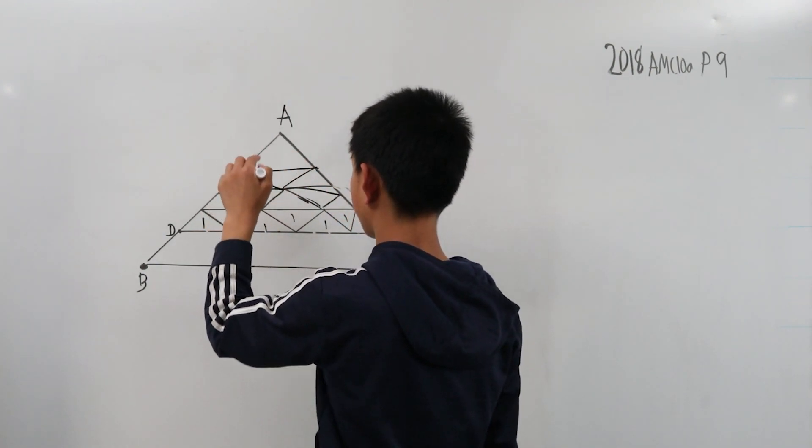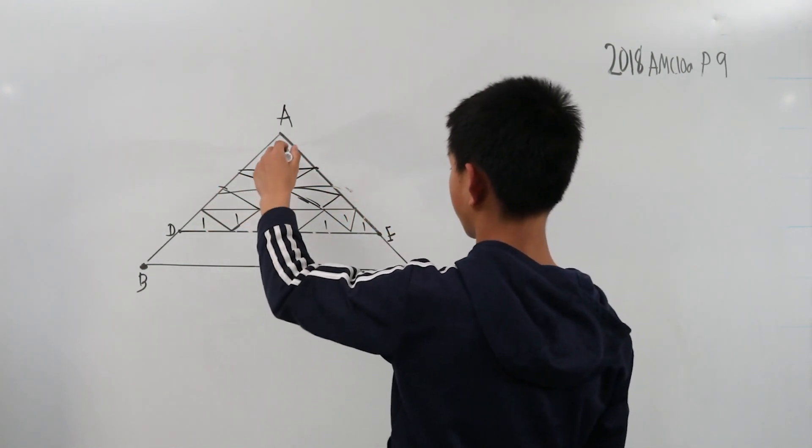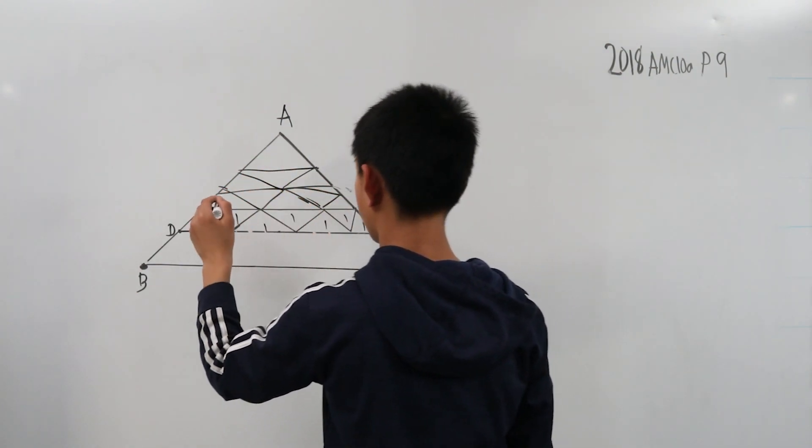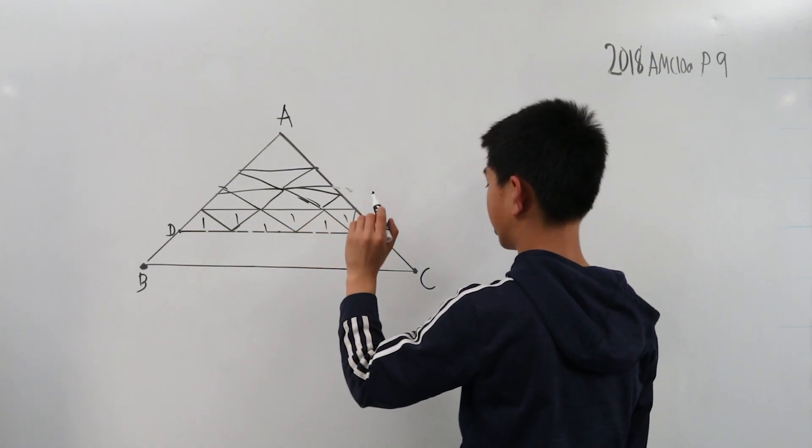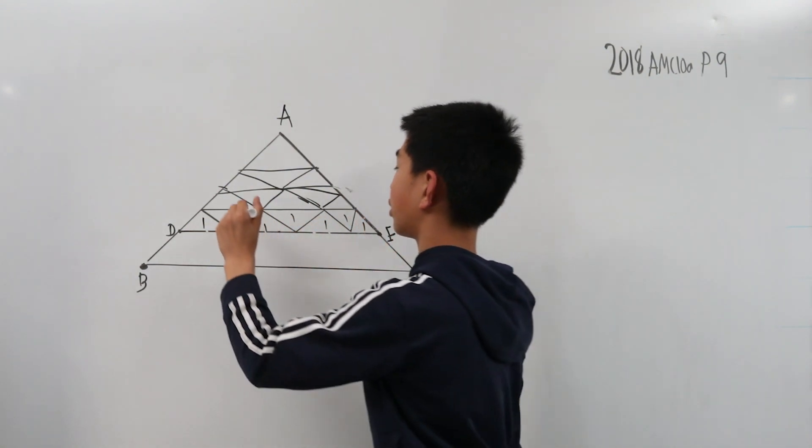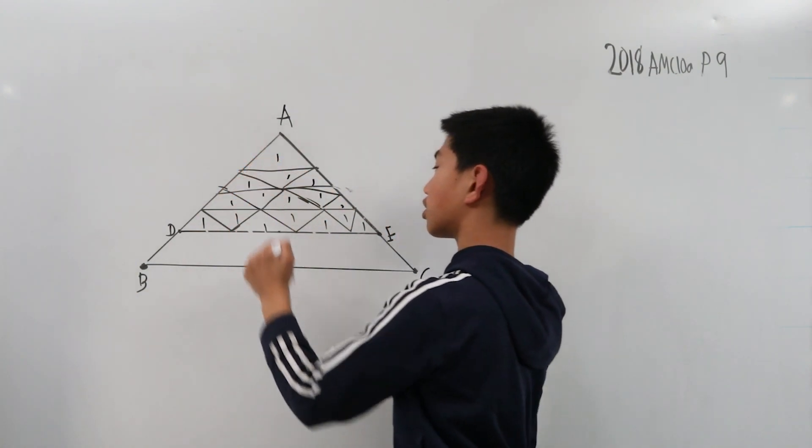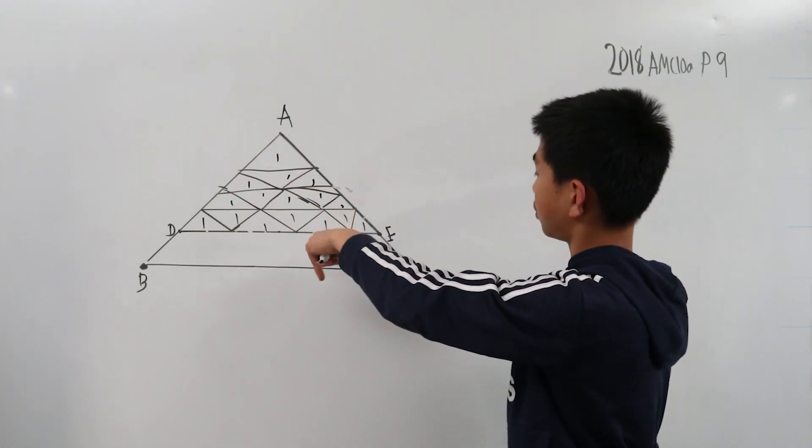We construct even more triangles until there's 1, 2, 3, 4, 5, 6, 7, 8, 9, 10, 11, 12, 13, 14, 15, 16 triangles, all with area 1, that cover up the top of this triangle.